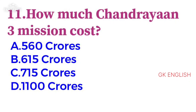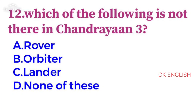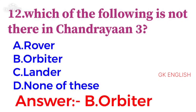The eleventh question: How much did the Chandrayaan-3 mission cost? The answer is B: 615 crores. The twelfth question: Which of the following is not present in Chandrayaan-3? The answer is B: Orbiter.